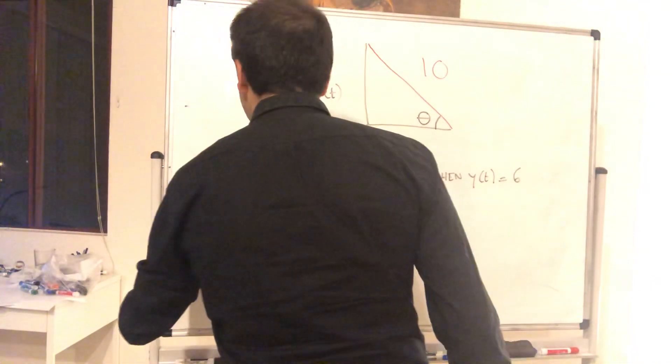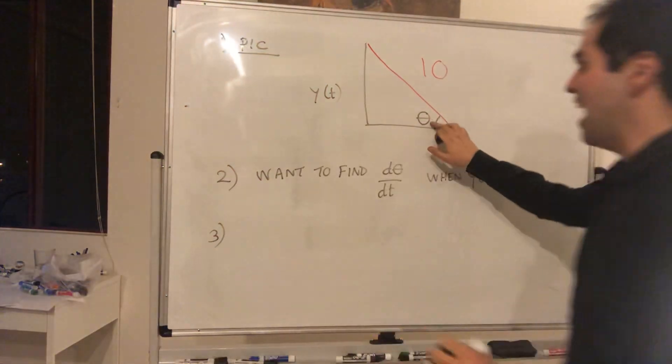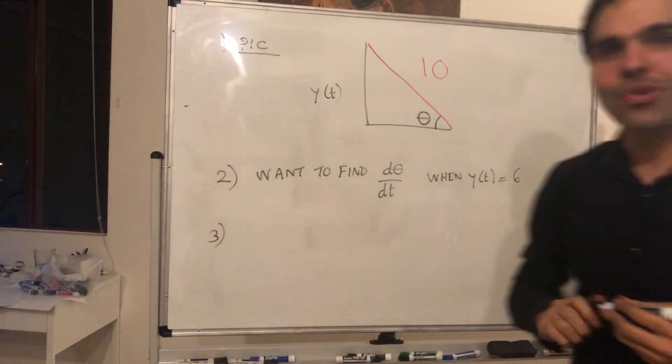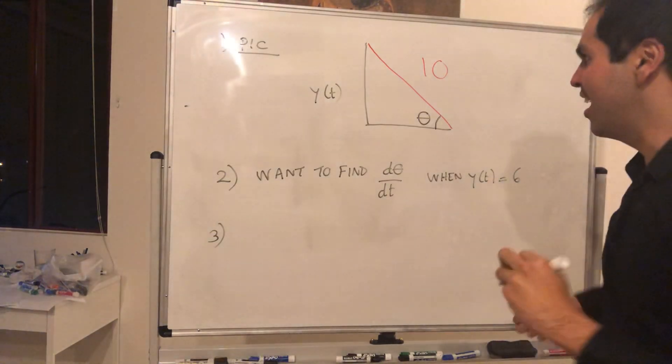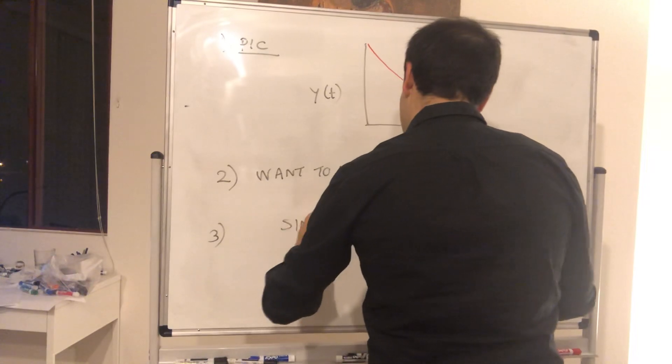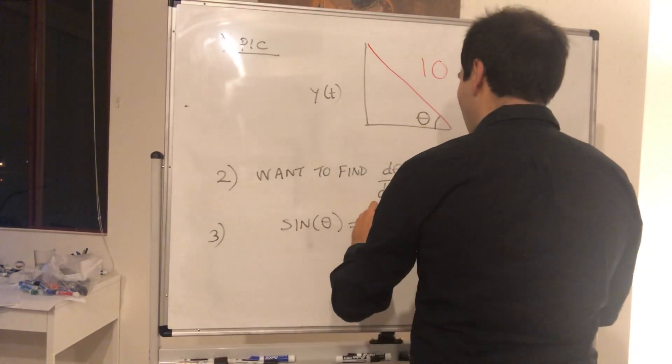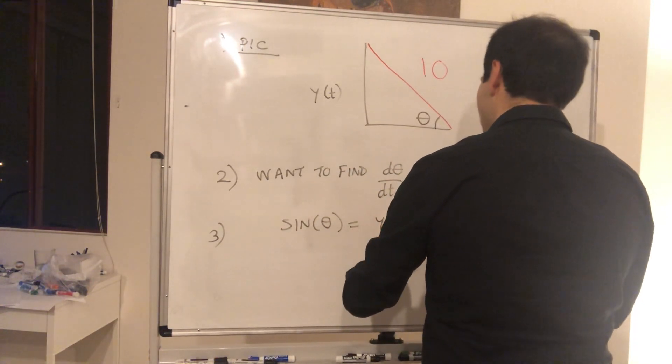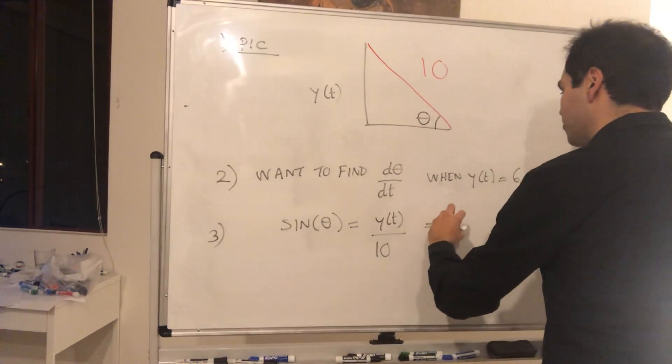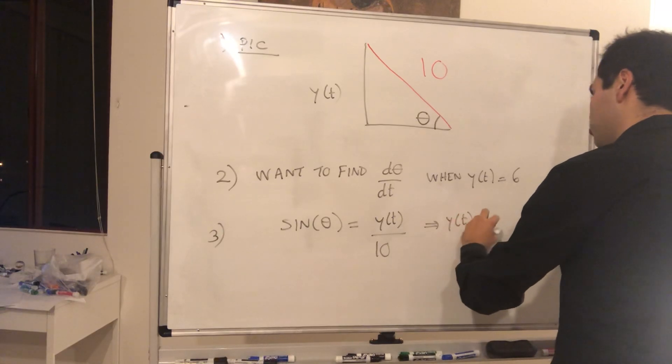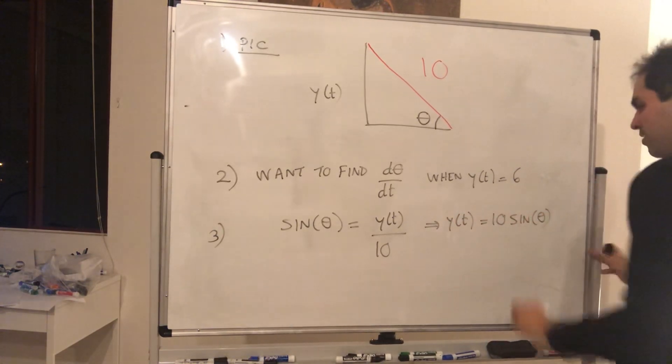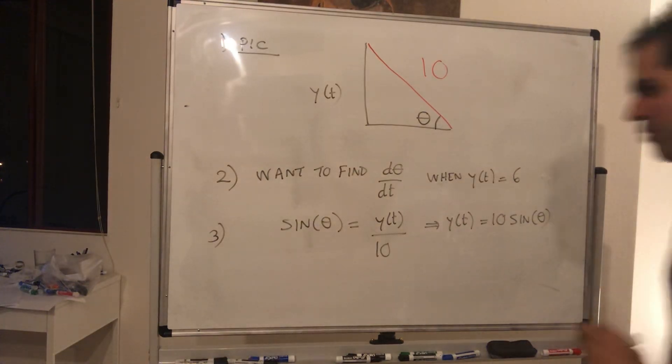And now well we need an identity relating the angle with the opposite and the hypotenuse. So abracadabra sohcahtoa and we get sine of theta equals y of t over 10. So in other words, y of t equals 10 sine of theta.